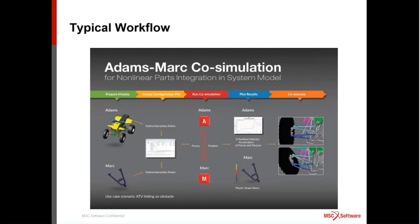The typical workflow for working with this tool is shown here. You'll start on the left side with preparing the models in both ADAMS and MARC, then creating a configuration file that defines the interaction between those two models for the co-simulation tool. There's a small GUI that helps you set that up. Then you'll run the co-simulation in which the ADAMS solver sends position and motion data to MARC, and the MARC solver passes force response back to ADAMS. You can then do post-processing independently in ADAMS and in MARC using Mentat, and optionally do a co-animation at the end through a plug-in in ADAMS and CEI Insight.